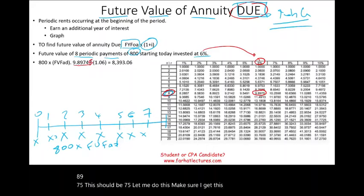Simply put, you have to deposit $1,166 for the next 10 semi-annual payments — every six months — and that money will earn 8% annually, so you will have a total of $14,000. It's very important to see the proof at least once so you are convinced this works.